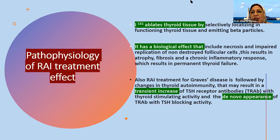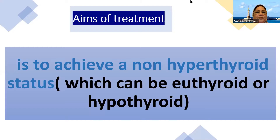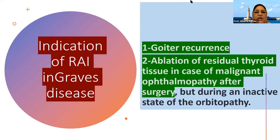The radioactive iodine treatment for Graves' disease is followed by changes in thyroid autoimmunity that may result in a transient increase in the TSH receptor antibodies with thyroid-stimulating activity and the de novo appearance of these antibodies with TSH-blocking activity. The aim of treatment with radioactive iodine is the achievement of a non-hyperthyroid status, either in the form of euthyroidism or hypothyroidism.